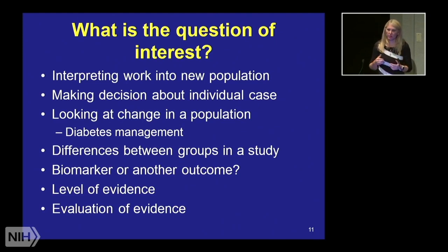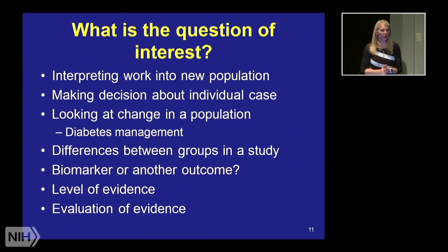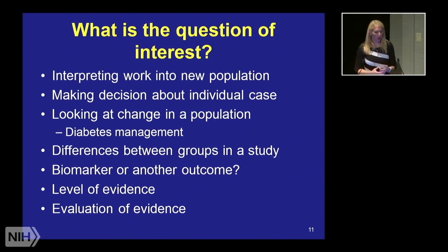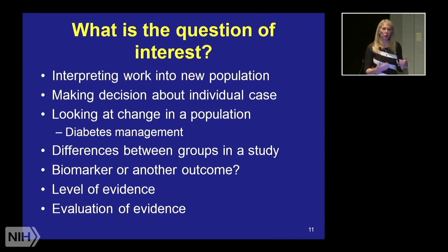Whenever you're describing your study design, the most important thing to focus on is: what is the question of interest? What is the hypothesis that you want to test? Do you want to see whether an intervention works in a new population? Do you want to make predictive responses about who will respond to one treatment versus another? Do we want to look at overall change in a population, differences between groups, comparative effectiveness — drug A versus drug B, treatment A versus treatment B? Are there biomarkers or outcomes we're interested in? And what's currently known that helps determine where we go next?